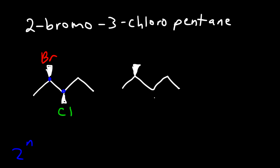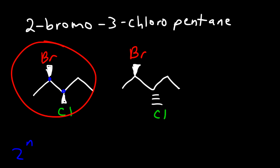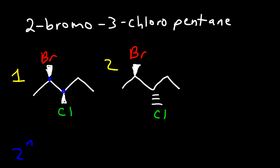We can keep the bromine atom on the wedge and put the chlorine atom on a dash, giving us a different stereoisomer. Let's call this compound 1 and compound 2. Compounds 1 and 2 are diastereomers because only one chiral center has changed but not all of them.